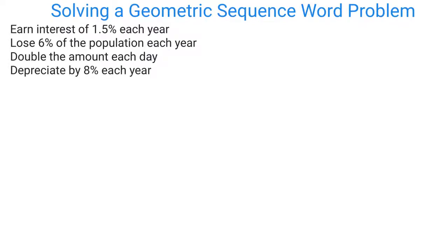Here are some example phrases that would tell you it's geometric, because we're looking for that multiplier. A lot of these have to do with percents. If you earn interest of 1.5% each year, that's a geometric multiplier. If you lose 6% of the population each year, that's also a multiplier. Doubling something implies multiplying by 2, and depreciating by 8% means you are losing that amount.